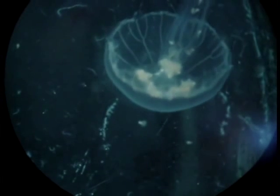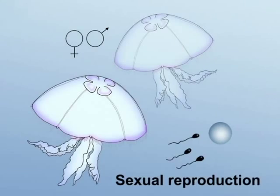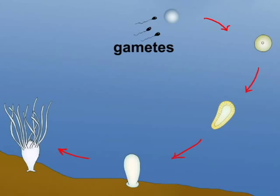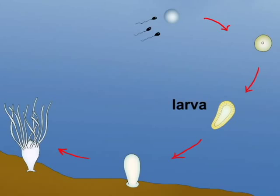Within the next months, the jellyfish grows and is able to reproduce. There are male and female jellyfish that respectively produce sperm and eggs. The male releases sperm into the water that reaches the female gonads, fertilizing the eggs. The fertilized egg releases a free-swimming larva called planula. This kind of reproduction is defined as sexual.